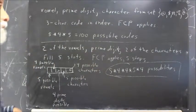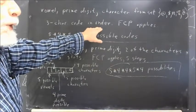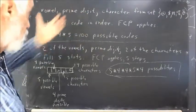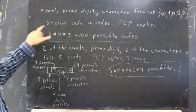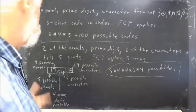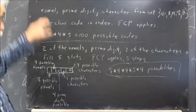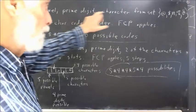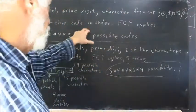We're going to select a three-character code in order. The code is specified in the problem, which you should read. It says first we choose a vowel, then a prime digit, then a character from the set. That's the order.